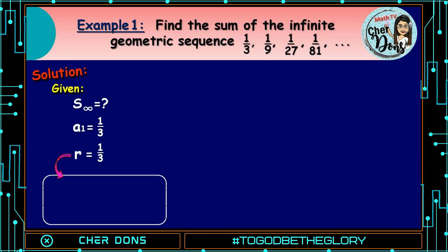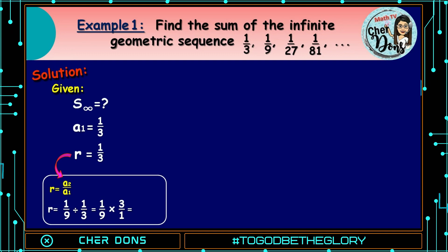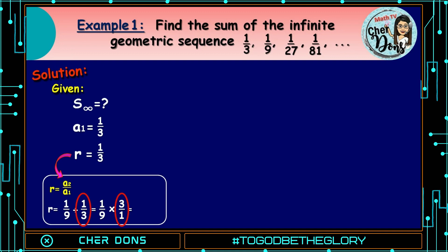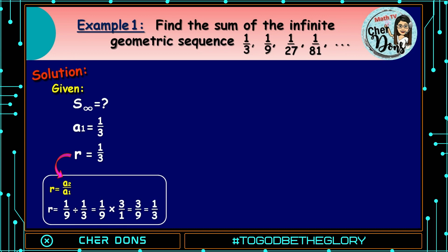We get the value of r by dividing the second term by the first term. So, a sub 2 divided by a sub 1, and that is 1/9 divided by 1/3. Remember that in dividing two fractions, copy the first given fraction, get the reciprocal of the second fraction, then multiply the two numerators and the two denominators. So, 1/9 times 3/1 — that's the reciprocal of 1/3. We have 1 times 3 is 3, and 9 times 1 is 9, so it is equal to 3/9. Simplifying, we have 1/3.